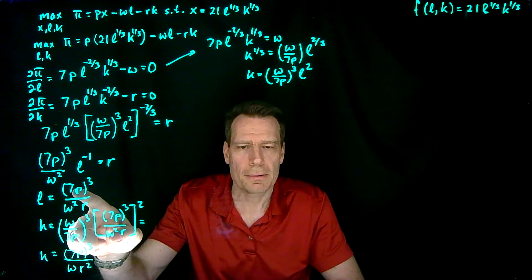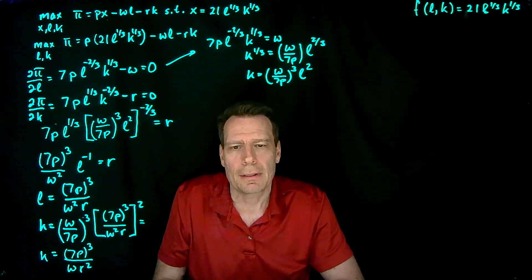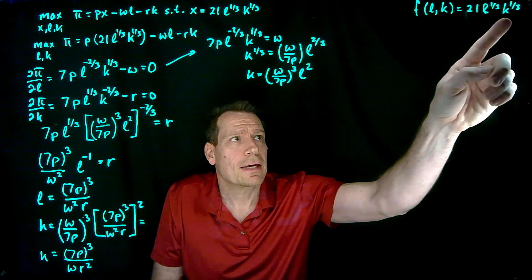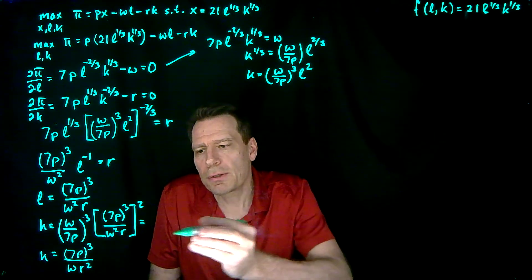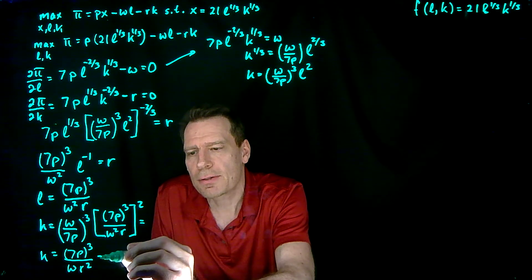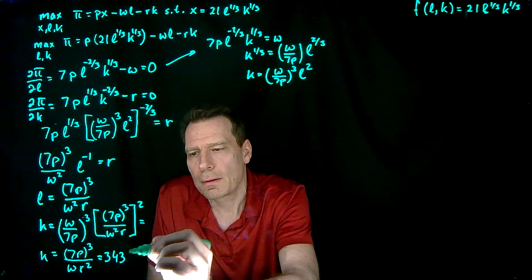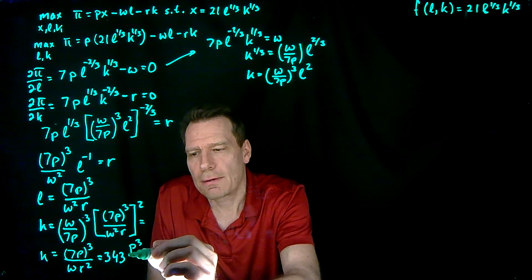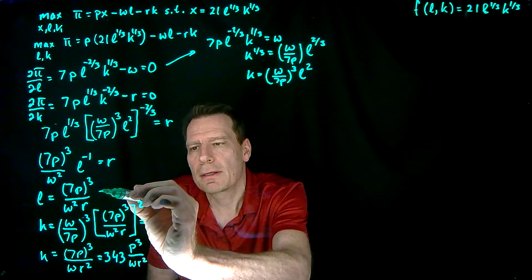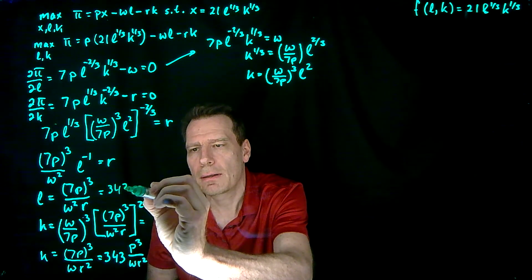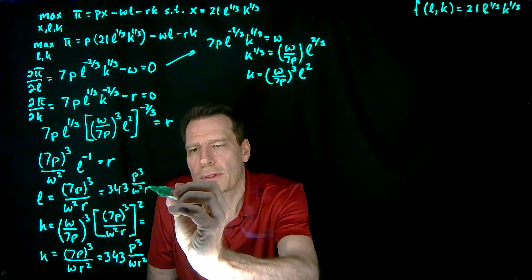Notice the capital demand function looks similar to the labor demand function except the roles of W and R are reversed — that's because L and K enter symmetrically into the production function. We can multiply out: K equals 343P to the third divided by WR squared, and similarly L equals 343P to the third divided by W squared times R.